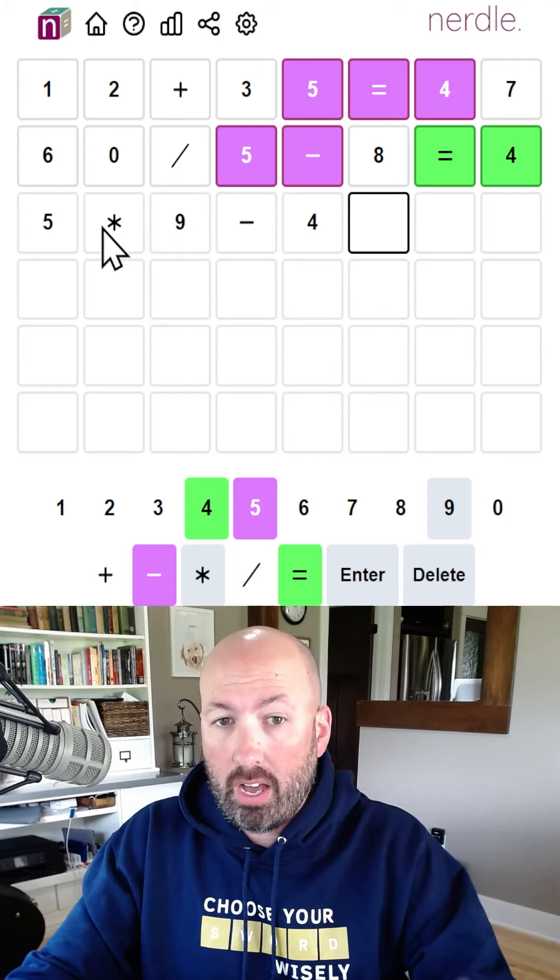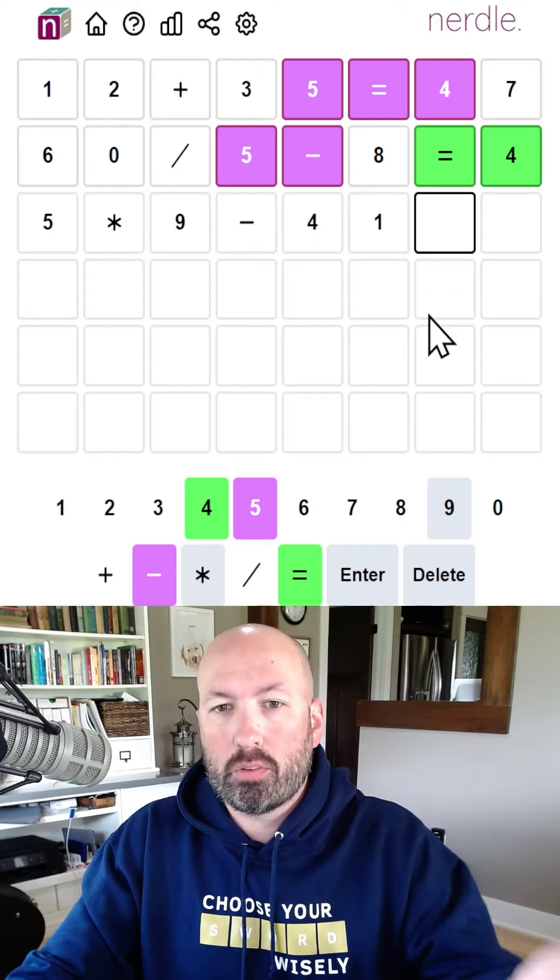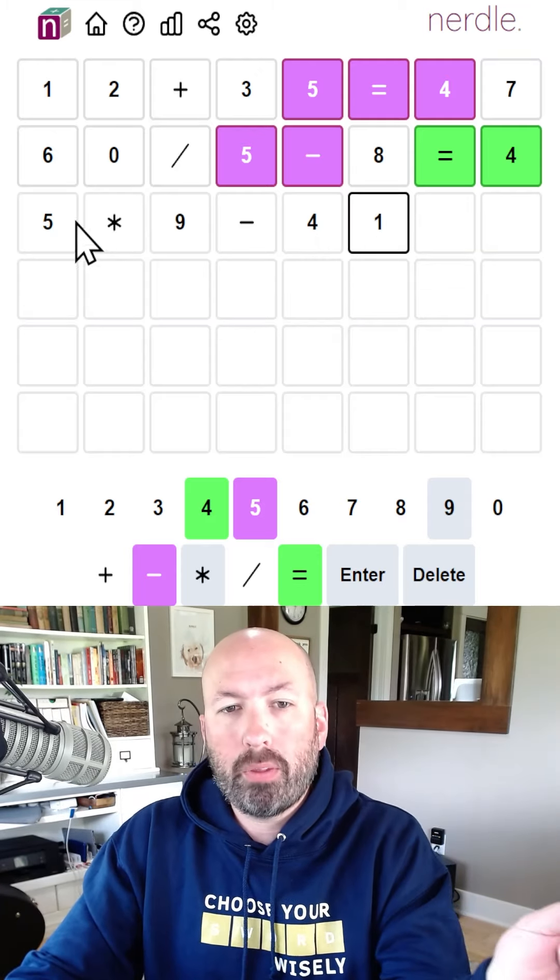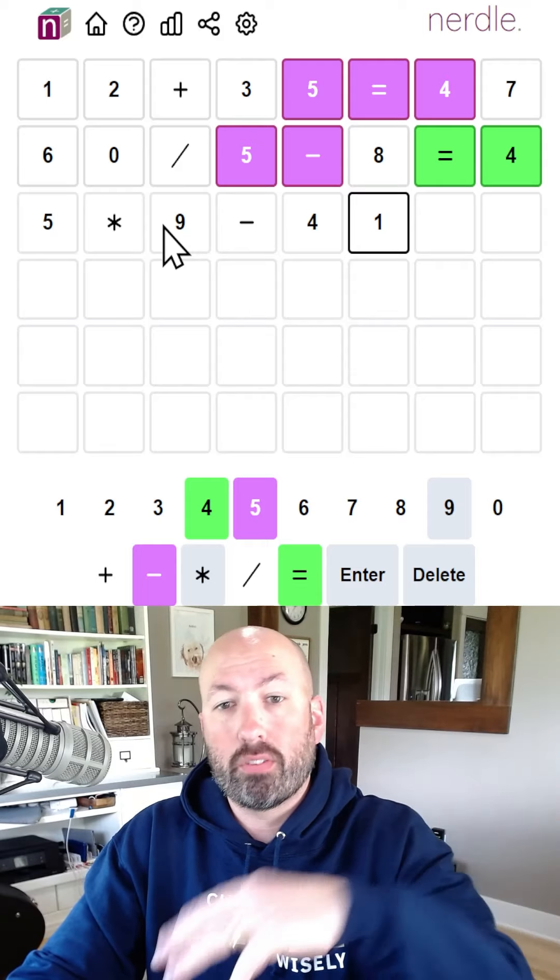So we could do five times nine, which is 45, minus, oh, and then you have to subtract 41. Oh, and that's the other problem. Okay, if we're multiplying by five, our answer is going to be something that ends in a five or a zero.